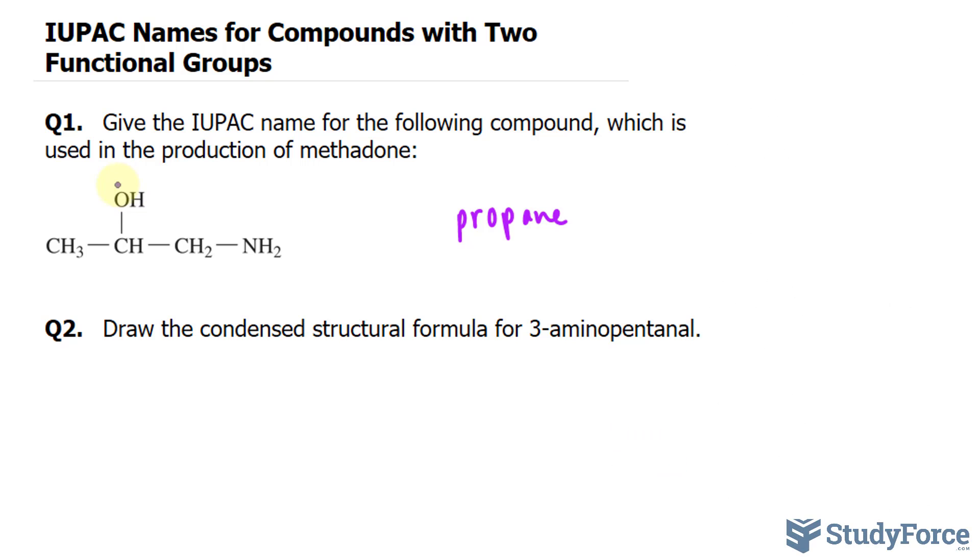The way we name alcohols, OH, is we drop the E and replace it with OL. Think of the word alcohol, OL. And given that the OH is on the second carbon, where we start numbering the carbons from here—one, two, three—we call this 2-propanol.